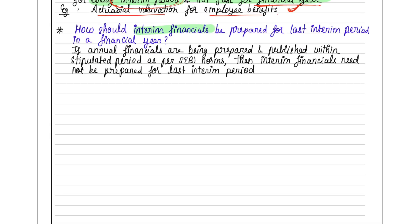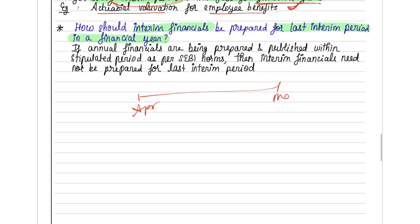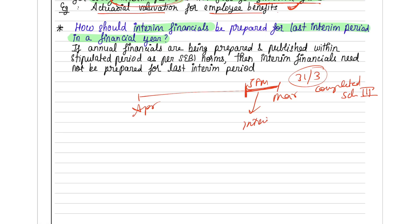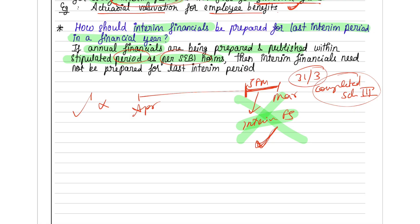For the last interim period in a financial year — for example the January-February-March quarter — if annual financial statements are being prepared and published within the stipulated period as per SEBI norms, then you need not prepare the separate interim FS for that last quarter. But if the annual statements are not being submitted within the stipulated SEBI norms, then you must prepare the last interim period FS.